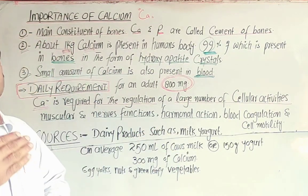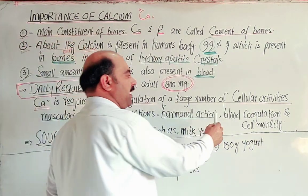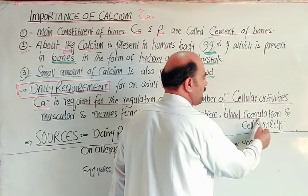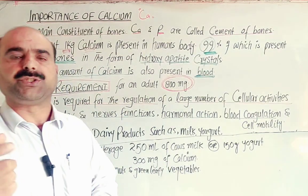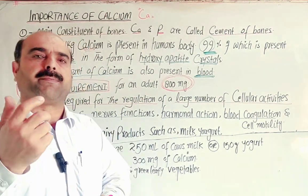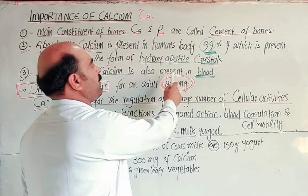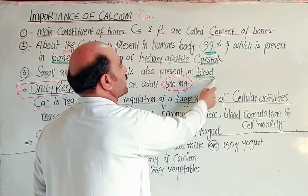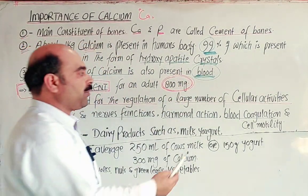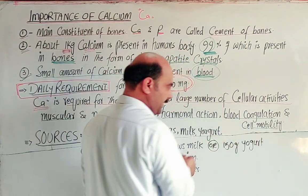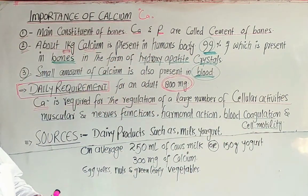Calcium also plays a role in hormonal actions — chemical glands release hormones whose actions are controlled in the body. Additionally, calcium is involved in blood coagulation: when a cut or injury occurs, bleeding can be controlled. Calcium also supports cell mobility and cell movement in the body.